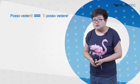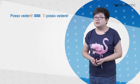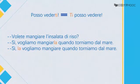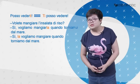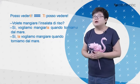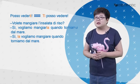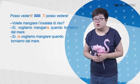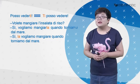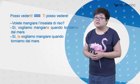这个时候，我们还可以把ti放在情态动词Posso的前面，那么我们可以说Ti posso vedere? 我能看见你。这时候我们把ti放在了句首。Volete mangiare l'insalata di riso? Sì, vogliamo mangiarla. 一样的，情态动词后面接动词原形，我们可以把直接宾语代词放在动词原形的后面，去掉动词原形最后一个字母E，连起来写：vogliamo mangiarla。